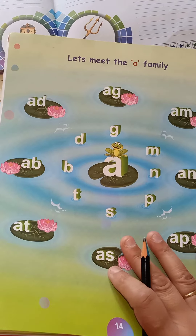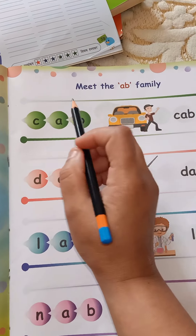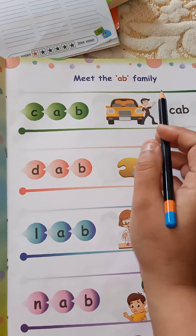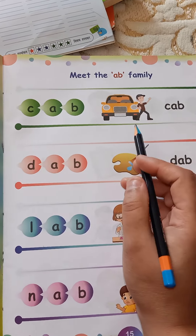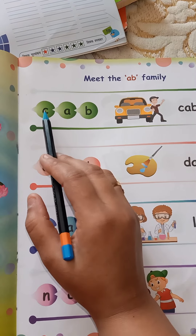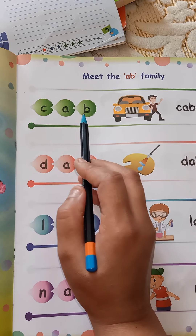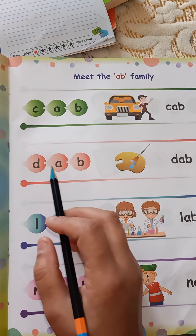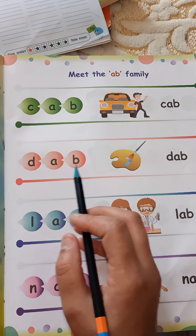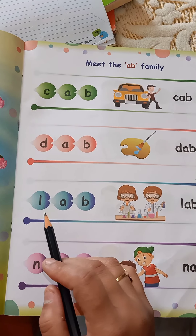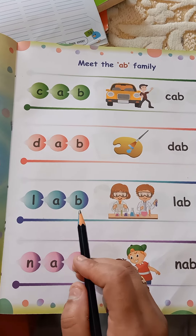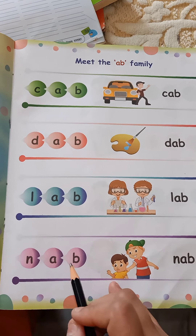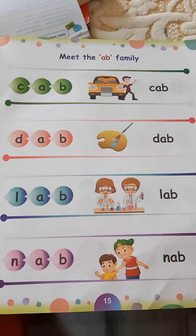So let's practice 'Meet the A Family.' K, ab — cab. T, ab — tab. L, ab — lab. N, ab — nap.